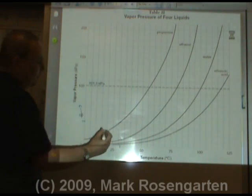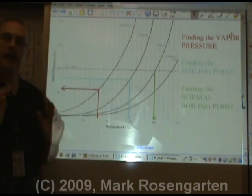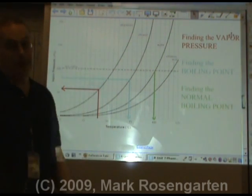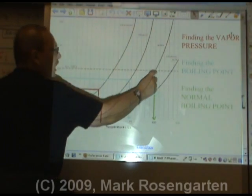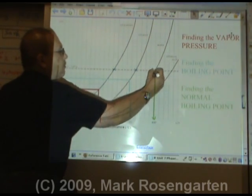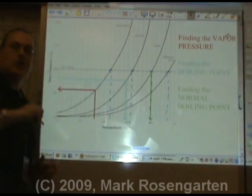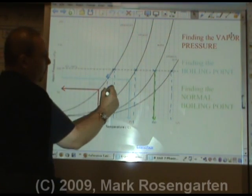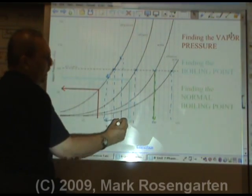Notice that as we increase the pressure, we also increase the boiling point temperature. If you want to find the normal boiling point — that's the boiling point under standard pressure of 101.3 kilopascals — just look at the dashed line on the graph. Wherever your liquid's line intersects the standard pressure line, that temperature is the normal boiling point for that liquid. As pressure drops, the boiling point drops; as pressure goes up, the boiling point goes up.